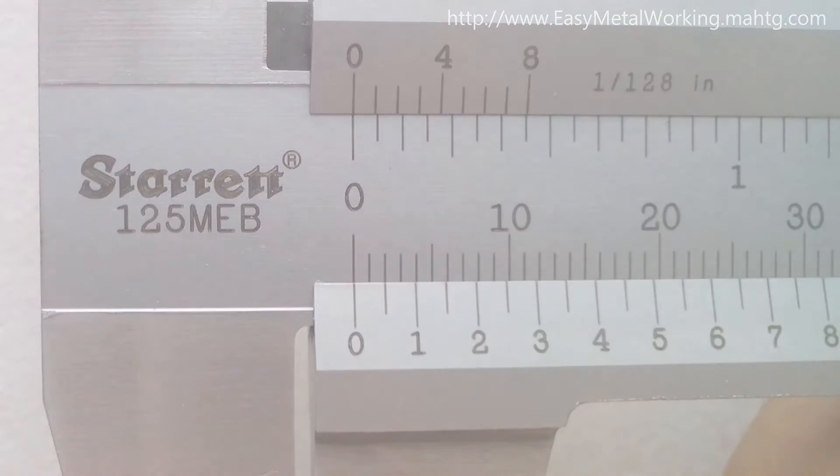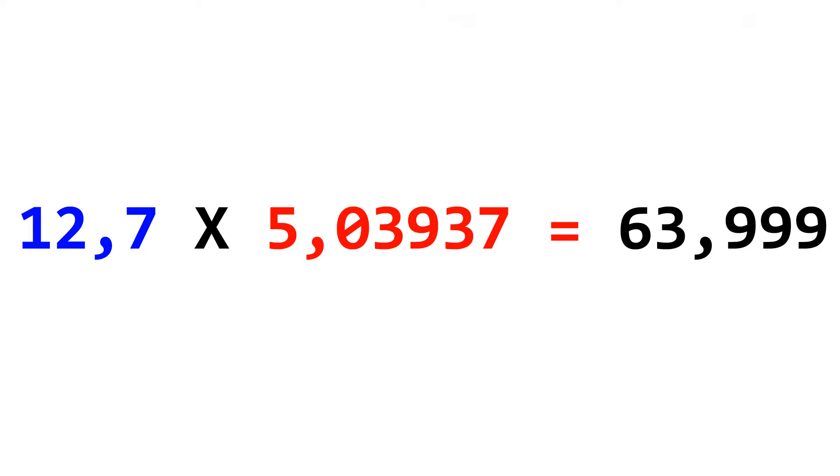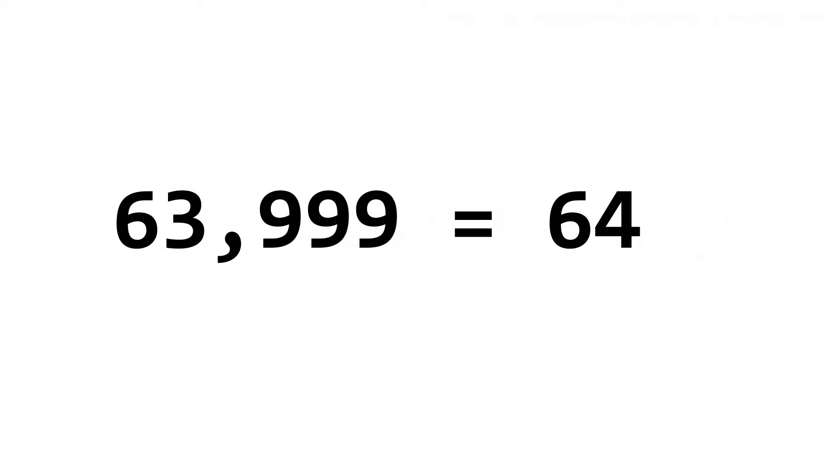Let's see. Step 1: 12.7 times 5.03937 equals 63.999. This value is equal to 64.